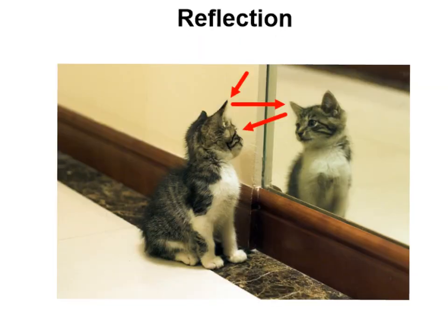Let's look first at reflection. The definition of reflection is simply when a wave strikes an object and bounces off of it. All waves can be reflected — whether they're sound waves, water waves, or light waves.